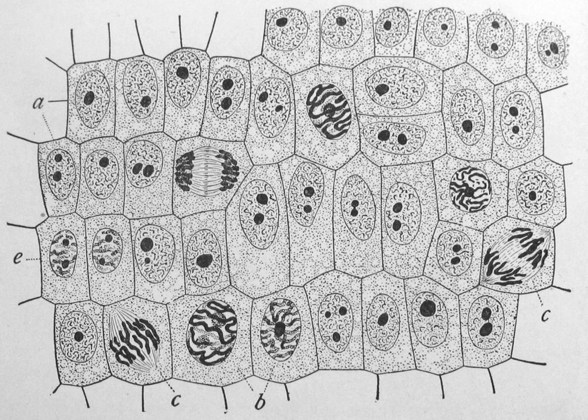Mitochondria and chloroplasts generate energy for the cell. Mitochondria are self-replicating organelles that occur in various numbers, shapes, and sizes in the cytoplasm of all eukaryotic cells. Respiration occurs in the cell mitochondria, which generate the cell's energy by oxidative phosphorylation, using oxygen to release energy stored in cellular nutrients to generate ATP. Mitochondria multiply by binary fission, like prokaryotes. Chloroplasts can only be found in plants and algae, and they capture the sun's energy to make carbohydrates through photosynthesis.